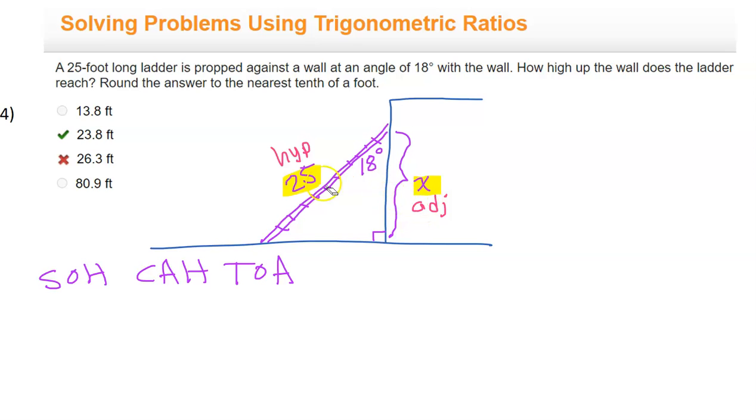Adjacent and hypotenuse—which trig function is that? Well, it's going to be this one because cosine is adjacent over hypotenuse. So this is going to be a cosine problem.